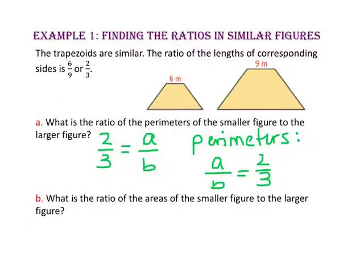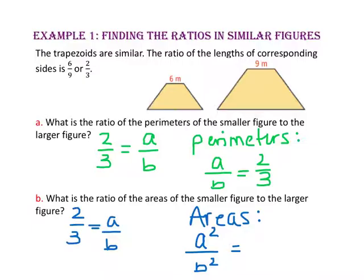For part B, what is the ratio of the areas of the smaller figure to the larger figure? Remember, the scale factor is 2 to 3, or A to B. The ratio for the areas is A squared to B squared, or 2 squared to 3 squared. So the ratio of the areas is 4 to 9.